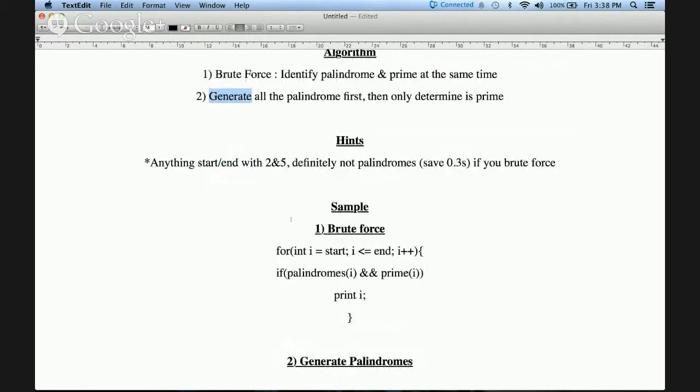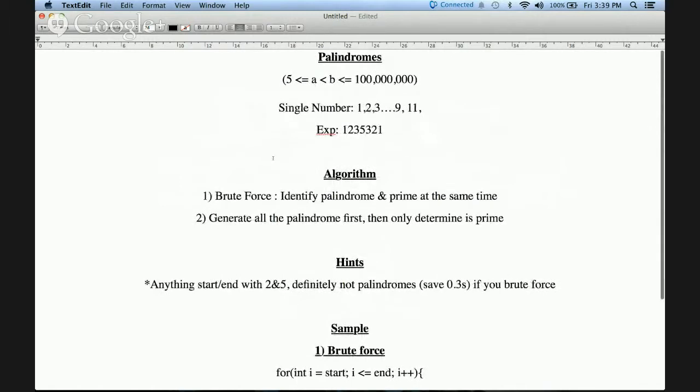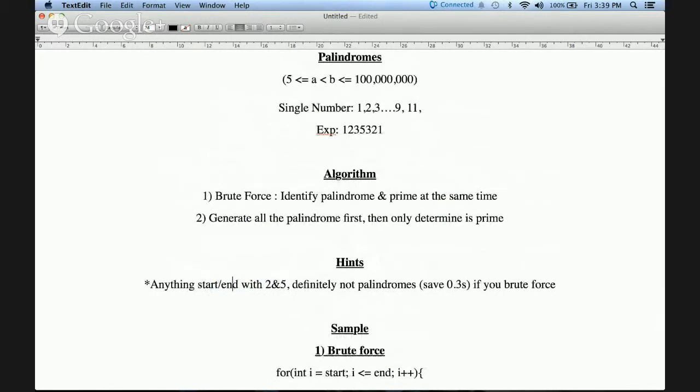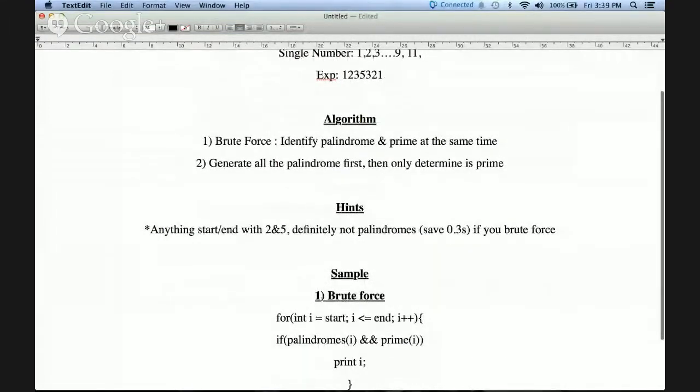So the second way is like what the USACO has told us to generate all the palindrome first, then only determine whether the palindrome is prime or not. So there are some other hints that you can use here to increase your searching speed if you are using brute force. So in case you search one by one from 5 to 100 million, if you are checking whether you start with or end with 2 and 5, that typical number will definitely say it is not a palindrome, so if you are having this condition checking there, it basically will save you around 3 seconds actually. This one I have been trying because I tried these two methods itself. For the brute force method, actually I hit the time limit issue, so that's why I changing to the second way to do it, which is generating all the palindrome first, then only determine whether it is a palindrome.